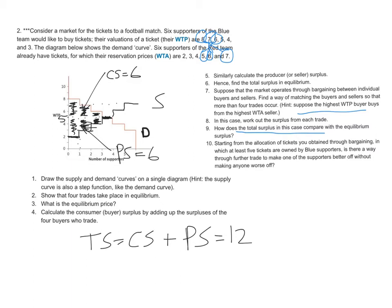So the total surplus in the second case is equal to just six. And then how does the total surplus in this case compare with the equilibrium surplus? Notice that six is a lot less than 12. So TS prime is less than TS.